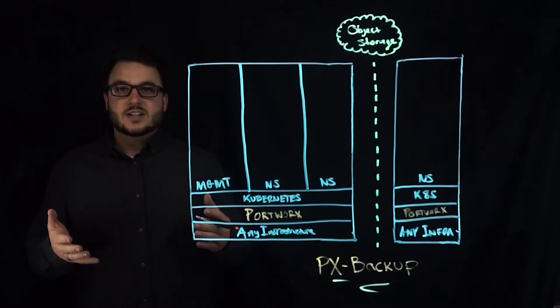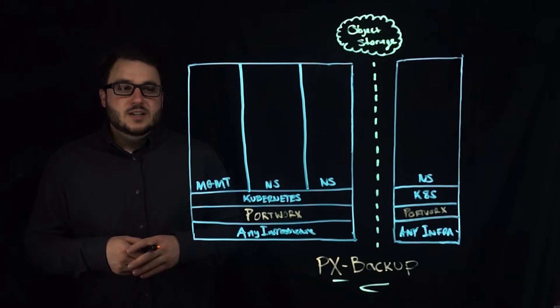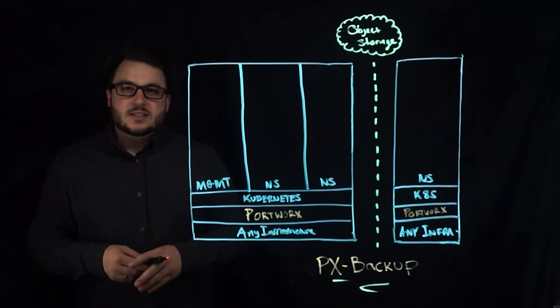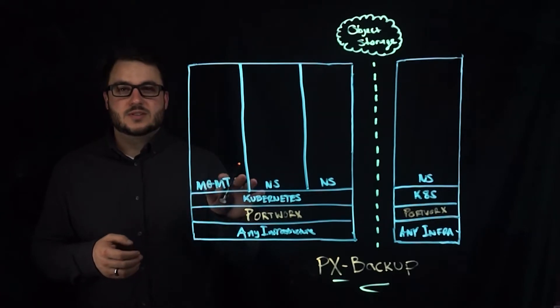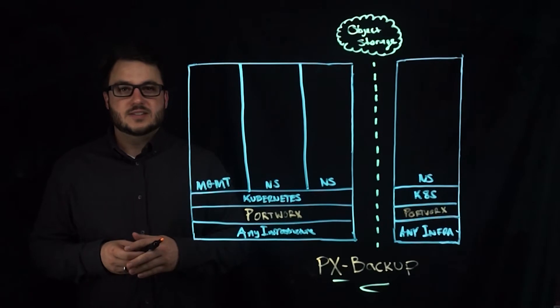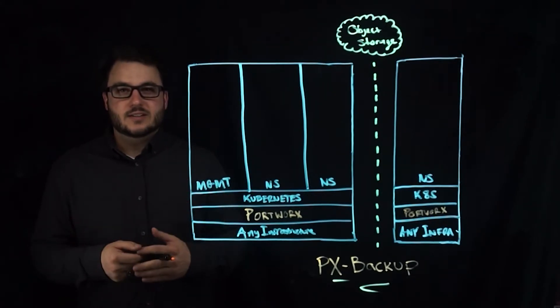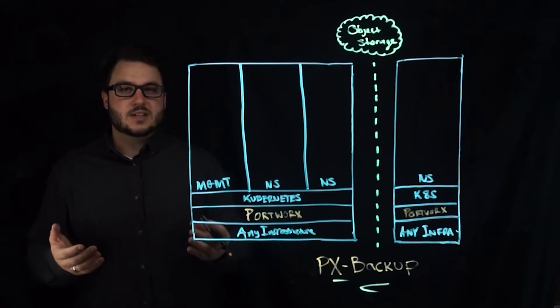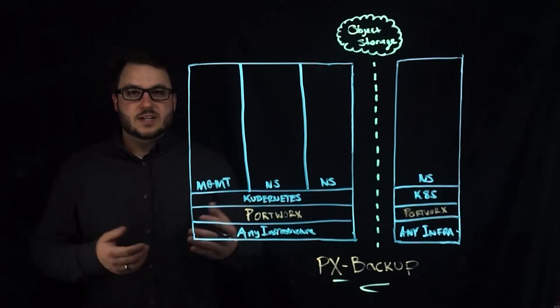Let's get started with how you install this. Portworx Backup is installed into a Kubernetes cluster just like your Portworx Enterprise daemon set is installed into Kubernetes today. Essentially you have a spec file and you apply it to a management cluster and PX Backup is set up and accessed through that management cluster.